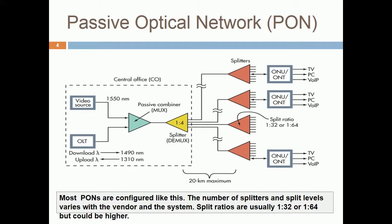Most PANs are configured like this. The number of splitters and split levels varies with the vendor and the system. Split ratios are usually 1 to 32 or 1 to 64, but could be higher.